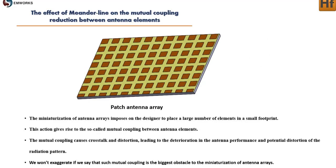The miniaturization of antenna arrays imposes on the designer to place a large number of elements in a small footprint. This gives rise to the so-called mutual coupling between antenna elements. The mutual coupling causes crosstalk and distortion, leading to deterioration in antenna performance and potential distortion of the radiation pattern. Such mutual coupling is the biggest obstacle to the miniaturization of antenna arrays.